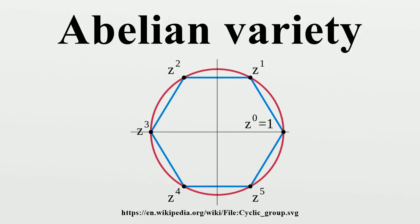is defined to be a line bundle L on A times T such that for all t in T, the restriction of L to A times {t} is a degree zero line bundle, and the restriction of L to {0} times T is a trivial line bundle.